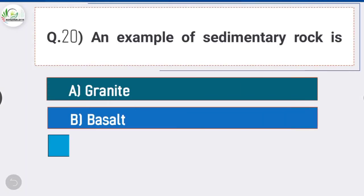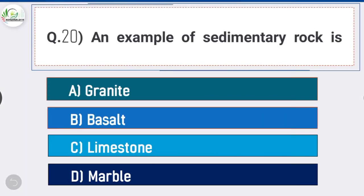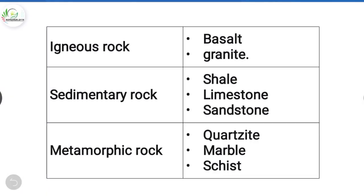Question number 20: An example of sedimentary rock is? Answer is option C, limestone. Examples of igneous rocks are basalt and granite. Sedimentary rocks include shale, limestone, and sandstone. Metamorphic rocks include quartzite, marble, and schist.